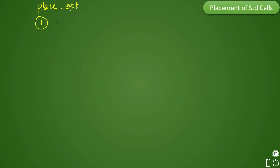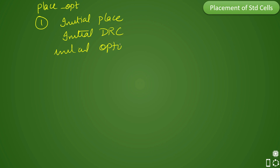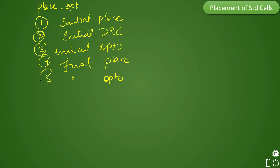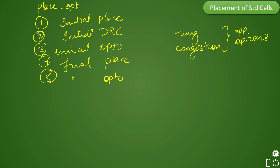Here is a quick review of the place-opt stage, which is done in five different stages: initial place, initial DRC, initial opto, final place, and final opto. Previously we discussed different strategies such as timing-driven and congestion-driven, which can be utilized based on app options available in the tool. There are further concepts related to placement that will be discussed in future videos. Please like, share, and subscribe to the channel. Thank you.